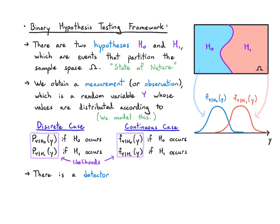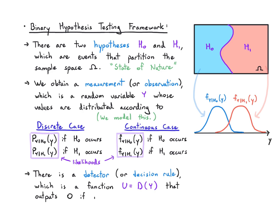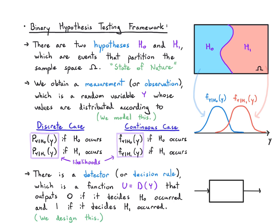Finally, we build a detector or a decision rule. That's a function of this observation y, and it puts out 0 if it thinks that h0 occurred, and it puts out 1 if it thinks that h1 occurred. Our job is to design this. The detector observes the value of y and puts out u, which is either 0 or 1.